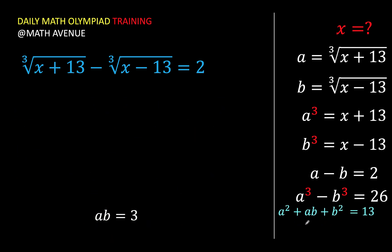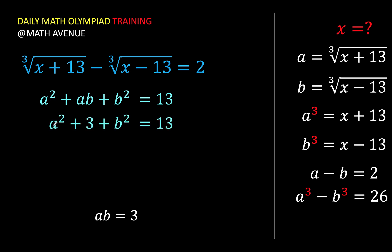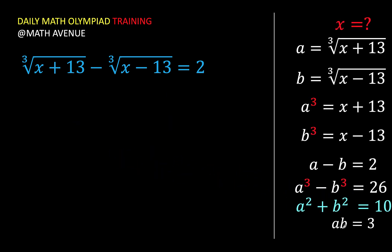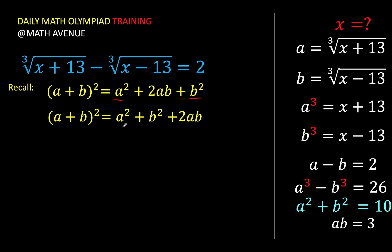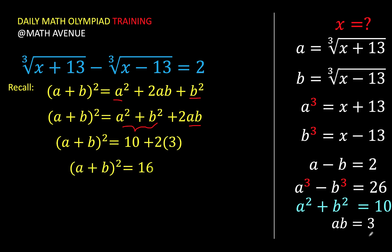Going back to our equation a squared plus ab plus b squared equals 13, we substitute ab equals 3, giving a squared plus 3 plus b squared equals 13. Subtracting 3 from both sides: a squared plus b squared equals 10. Using the identity (a plus b) squared equals a squared plus 2ab plus b squared, we get (a plus b) squared equals 10 plus 6 equals 16. Taking the square root: a plus b equals plus or minus 4.